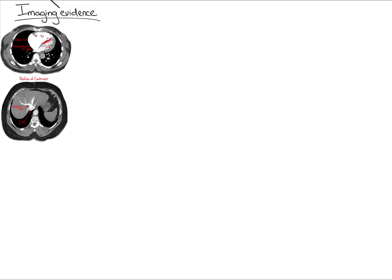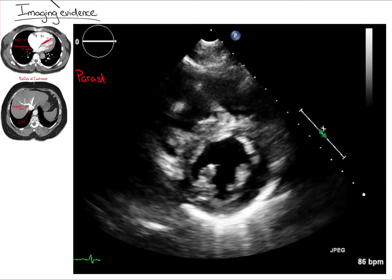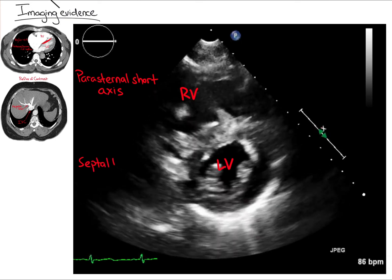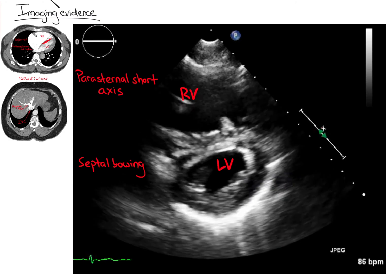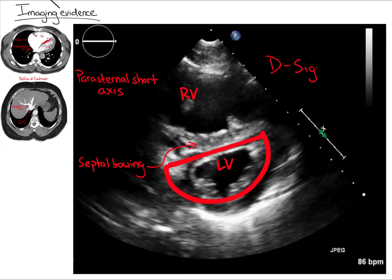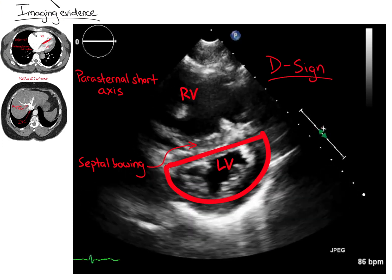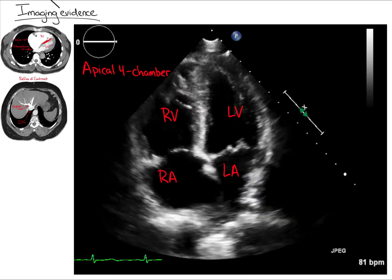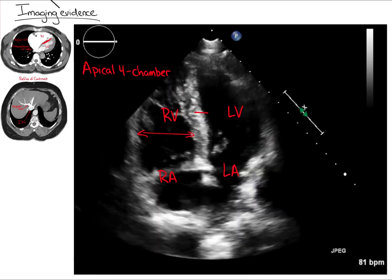On transthoracic echocardiogram, RV dilation may be apparent on the parasternal long axis view, but is best assessed on the parasternal short axis and apical four-chamber views. Let's review our patient's TTE. On the parasternal short axis view, RV dilation and septal bowing into the LV create the D sign, evidence of RV volume or pressure overload. On the apical four-chamber view, an RV that is larger than the LV and septal bowing again indicate RV volume or pressure overload.